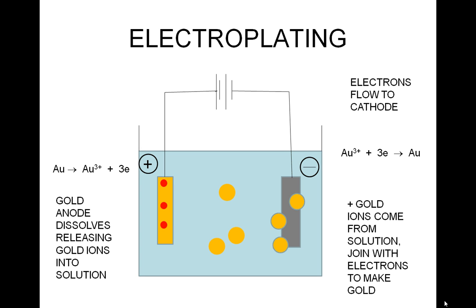This results in 3 extra electrons being formed on the piece of gold, and these then travel back through the wire to the battery and the whole process is repeated again.